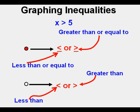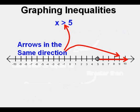When the unknown is on the left side, the direction of the arrow from the boundary point is the same as the direction of the arrow tip on the symbol — if it points to the right, the inequality on the number line points to the right of the boundary point. Caution: this only works when the unknown by itself is on the left of the inequality symbol. If it's on the right, you need to switch them around and switch the direction of the symbol as well.